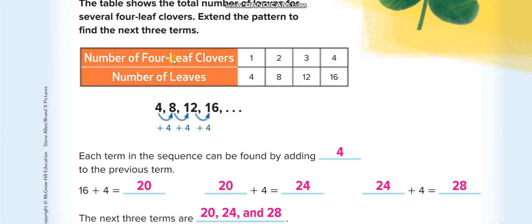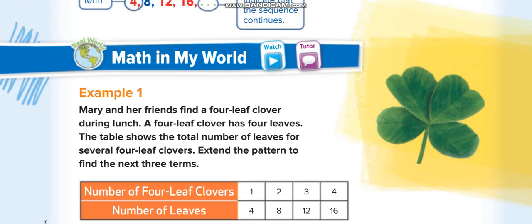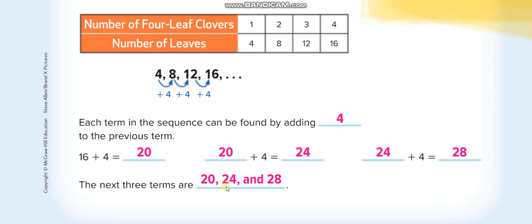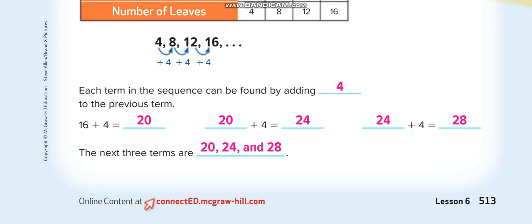Let's say this example here: the number of four-leaf clovers is 1, 2, 3, 4, and number of leaves for each is 4, 8, 12, 16. So the pattern is each time they're adding 4. The rule is add 4. Now they asked us the next three terms, so after 16 plus 4 is 20, then 20 plus 4 is 24, and 24 plus 4 is 28. So the next three terms are 20, 24, and 28.